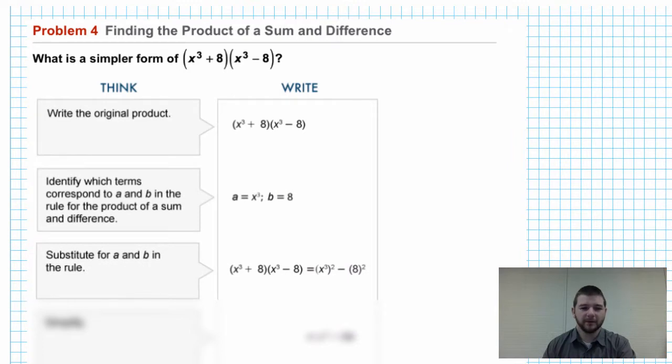Substitute for A and B in the rule. X cubed plus 8 times X cubed minus 8 will equal X cubed squared. Recall that will be our first term squared minus our second term squared. And noting properties of exponents, X cubed squared, a power to a power, we multiply the exponents to find X to the sixth minus 8 squared is 64.